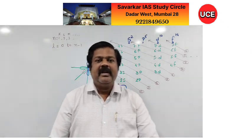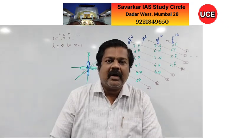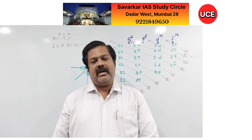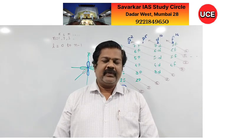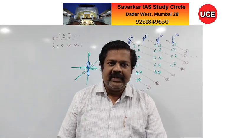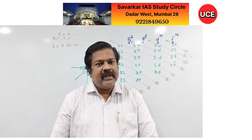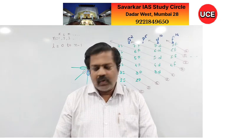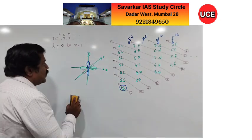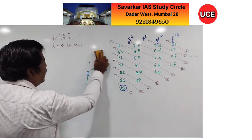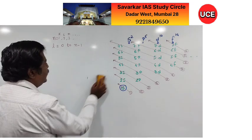The splitting into px, py, pz accounts for the Zeeman effect and Stark effect. This is how the shapes of orbitals are determined. Now we focus on the magnetic quantum number.